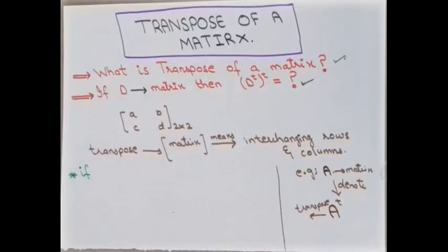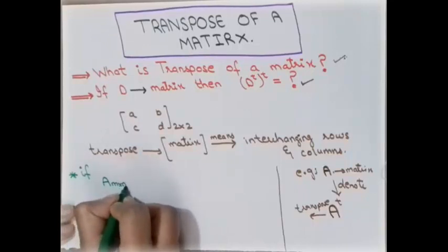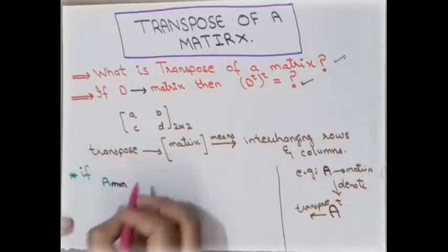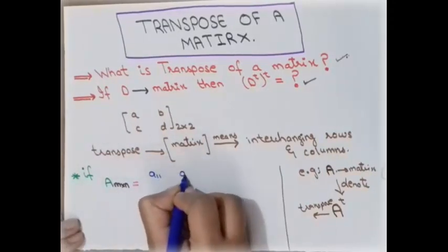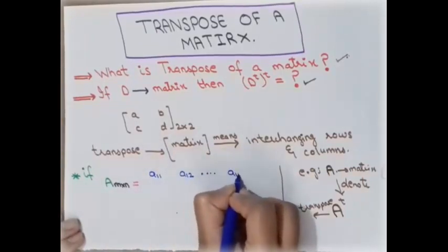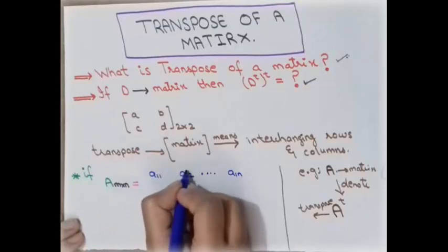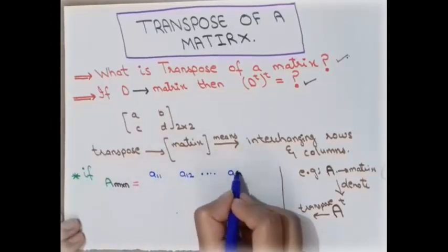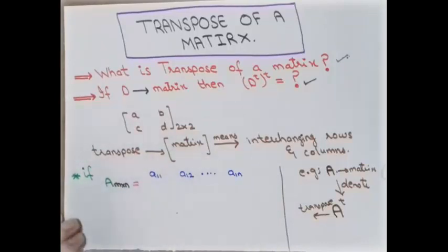Now let's take a general order matrix. Suppose matrix A with order m cross n — that means m rows and n columns. The entries are denoted as a11, a12, and so on up to a1n. Here, a11 is the entry in the first row and first column, a12 is in the first row and second column, and a1n is in the first row and nth column.